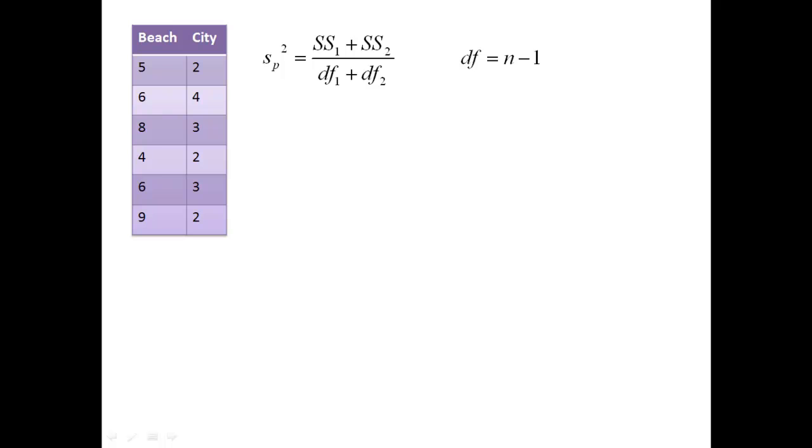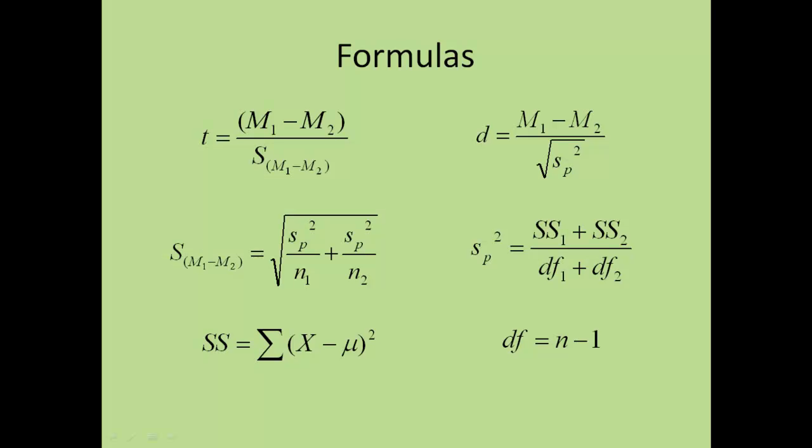We already know the sum of squares. We just calculated that. Now we need to make sure that we know what the degrees of freedom is for the two samples, for Beach and City. n for our sample is 6. You can count that we have 6 scores for Beach. You're going to subtract 1, so the degrees of freedom for the beach is 5. The degrees of freedom for the city is the exact same thing. Now we know our sum of squares and our degrees of freedom and we can calculate the pooled variance. The pooled variance is just 17.33 plus 3.34 over 5 plus 5, which equals 2.07.